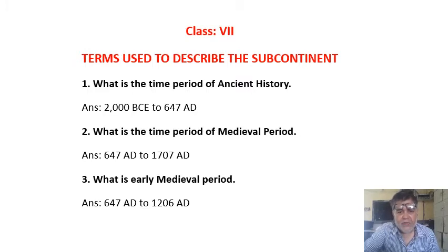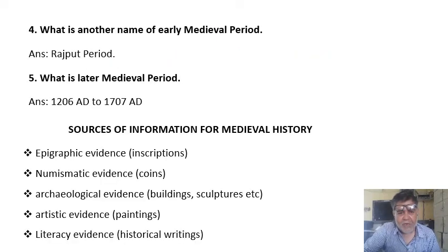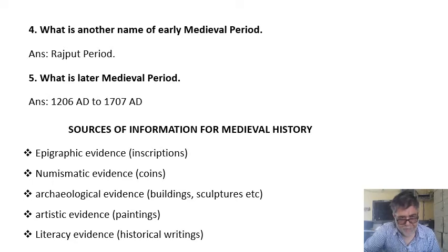The medieval history is also divided into two portions. First is the early medieval period. This time period is 647 to 1206, and it is also known as the Rajput period. The second portion is the later medieval period, with a time period of 1206 AD to 1707 AD.